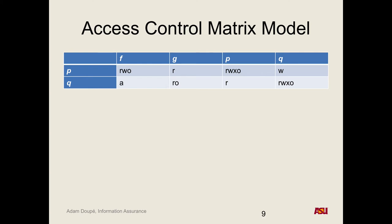How does this matrix change over time? The chmod command modifies it. We can add more processes to the system — more rows — and add more files as columns. So what are some benefits of using this access control matrix?